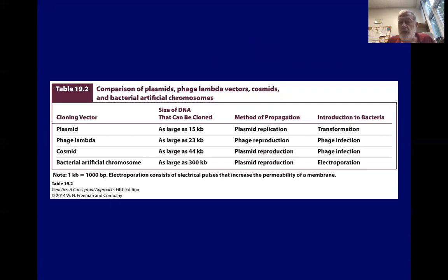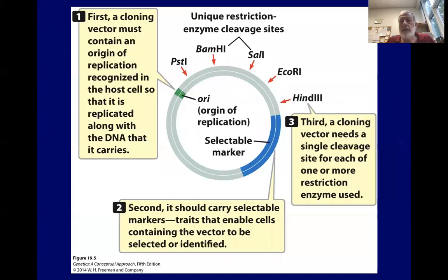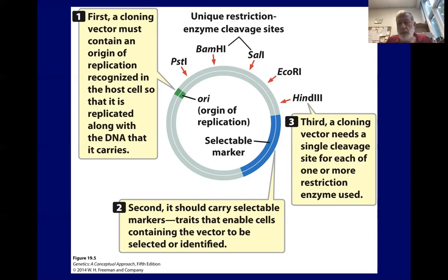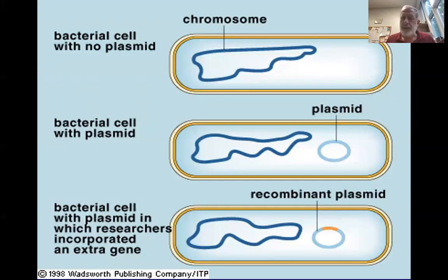This shows characteristics of commonly used vectors from a table in your textbook. Any vector must contain its own origin of replication — the ORI — as shown in green. Secondly, it must contain some kind of selectable marker, either an antibiotic resistance gene in bacteria or some kind of color marker so you can tell if the cells have been modified. It also needs several restriction enzyme recognition sites engineered into it so we can cut it open with the same enzyme used to generate our gene from its native source.